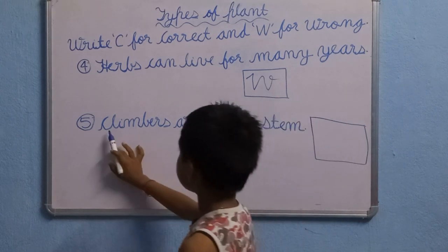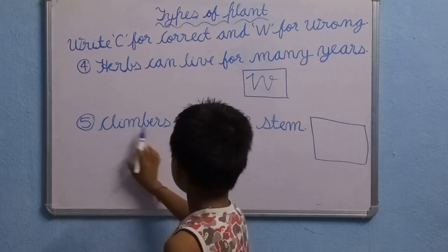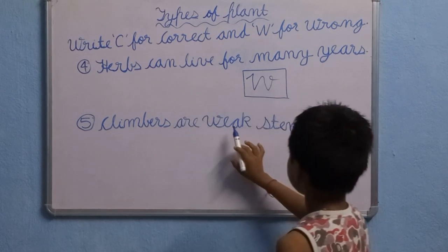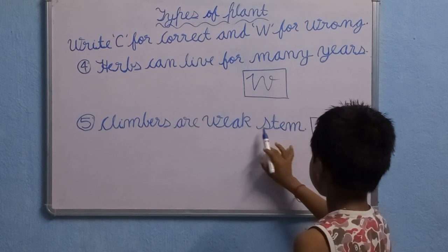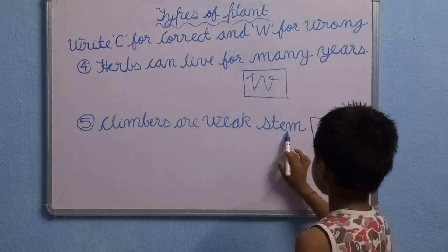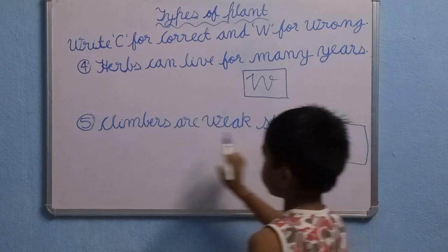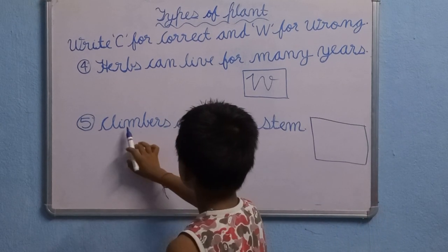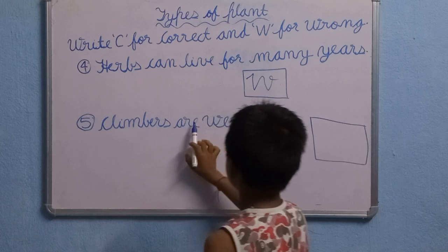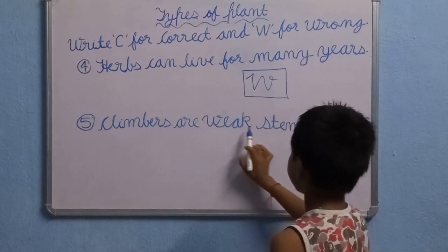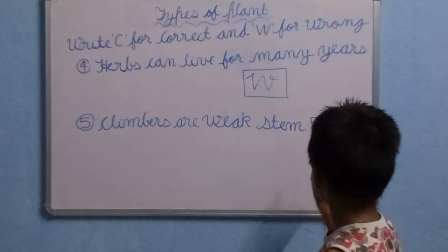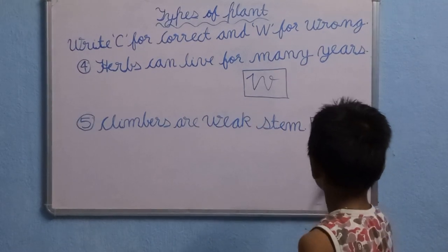Next question. Climbers are big shrubs. This is correct — C for correct.